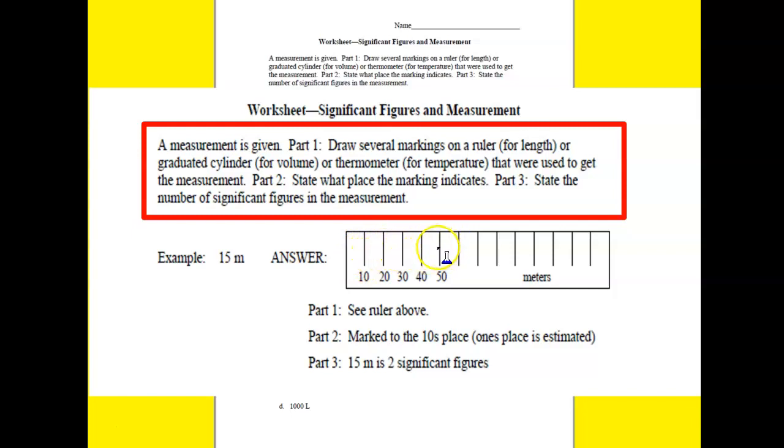The reason we know it goes by tens is because of the number of Significant Figures. Since I have two Significant Figures, that means that this last digit is the uncertainty. That is why our ruler has markings that go by ten. When this number is the uncertainty, that means you're estimating that value.